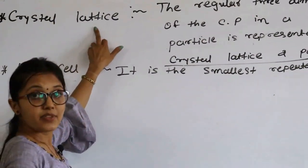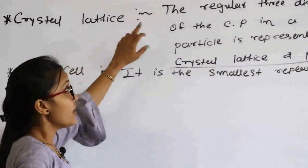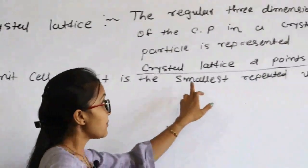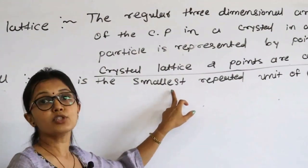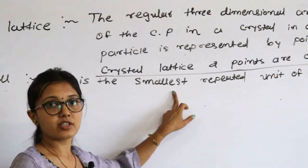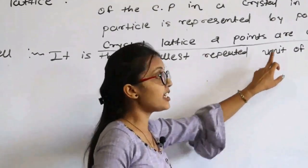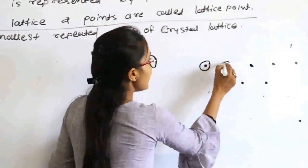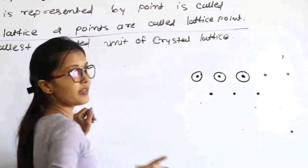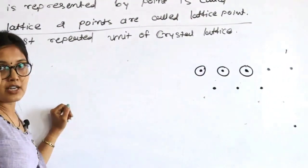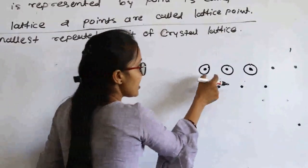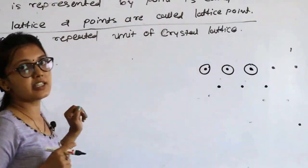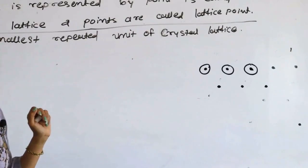Crystal lattice is known as a 3-dimensional regular arrangement, and unit cell means the smallest repeated unit — this word 'smallest' is very important. All these smallest repeated units together form the crystal lattice, and that is why this is known as a unit cell.